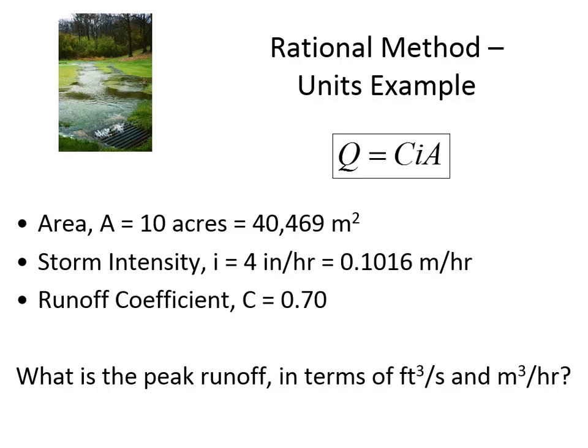We have a catchment with an area of ten acres — probably a field. In SI units that's 40,469 square meters. We'll assume a storm intensity of four inches per hour. With the rational method, it assumes the storm continues indefinitely, giving you the peak runoff. We don't need to know the time of concentration if storm intensity is steady. We have a runoff coefficient C of 0.7, which is unitless — the same value for SI or traditional units.